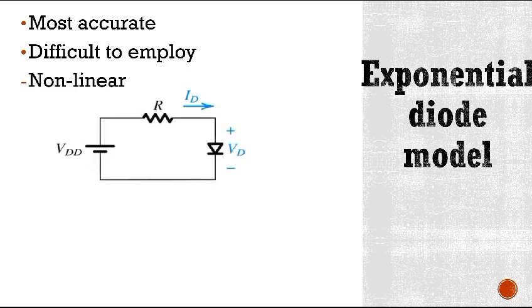Now, let's analyze this circuit using the exponential diode model. Assume that this VDD is greater than 0.5 volts or so. Here this 0.5 volts is cut-in voltage.